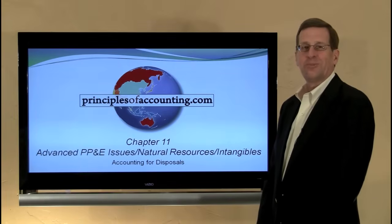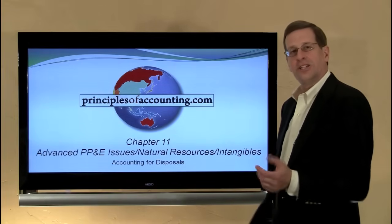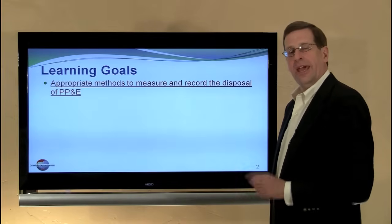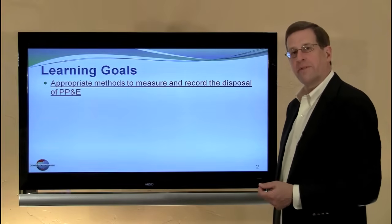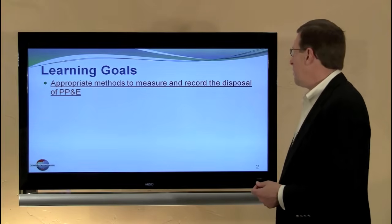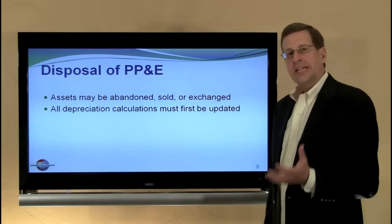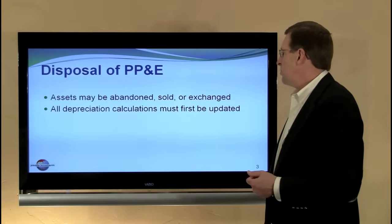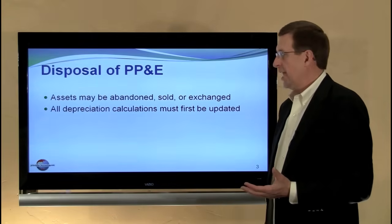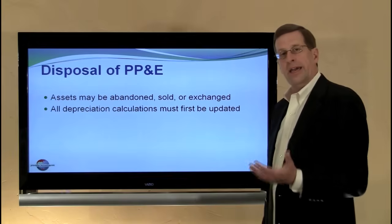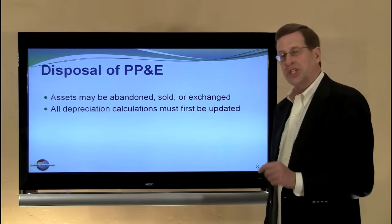I'm Larry Walther. This is PrinciplesOfAccounting.com, Chapter 11, and we will be looking next at the disposal — the accounting for disposals of property, plant, and equipment. Assets may be disposed of by sale, by abandonment, or exchange. In a subsequent module we will look at the exchange accounting.